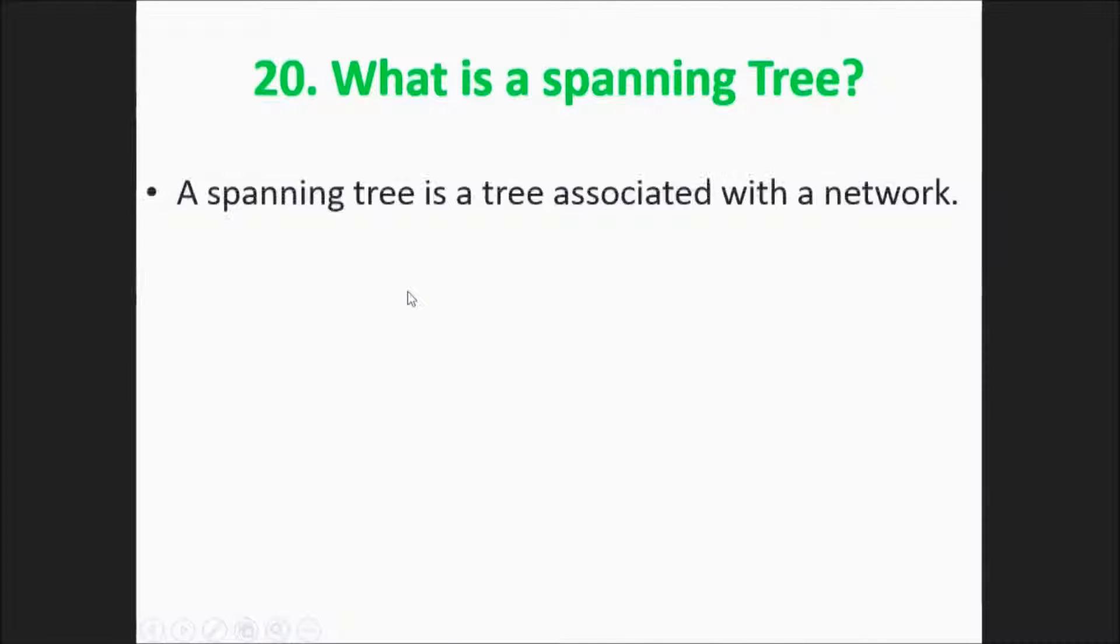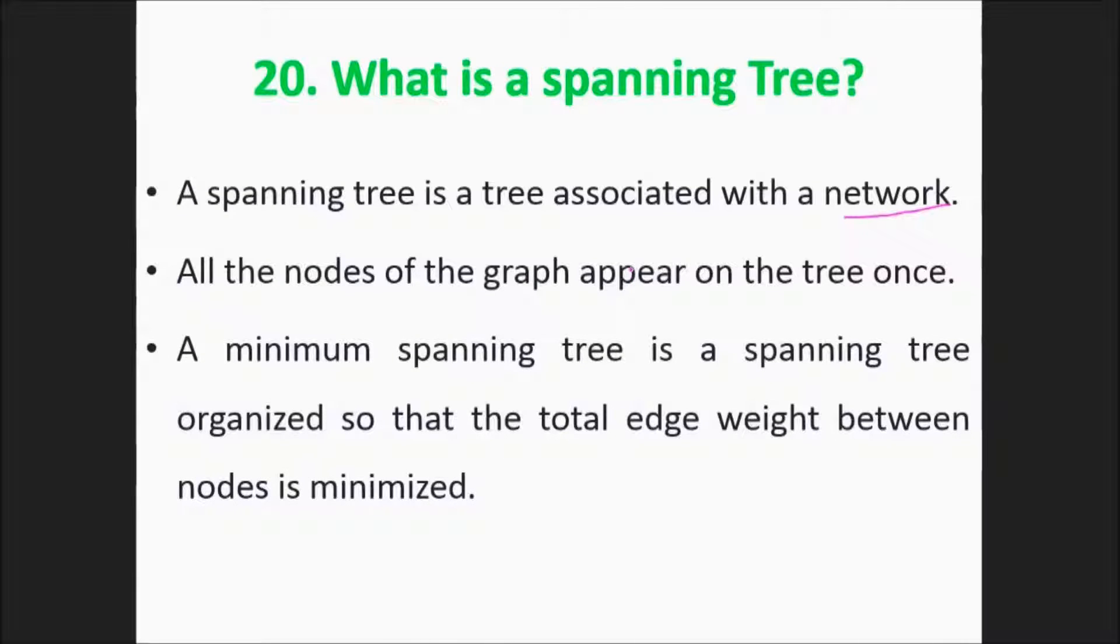What is spanning tree? A spanning tree is a tree associated with a network. All the nodes of the graph appear on the tree once. A minimum spanning tree is a spanning tree organized so that the total edge weight between nodes is minimized.